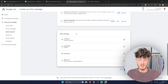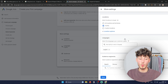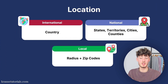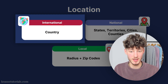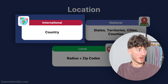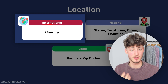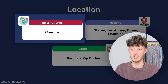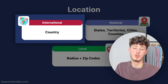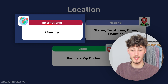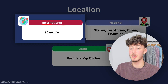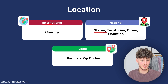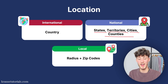In more settings you can set up your location targeting. There are three different location settings. The first is international — if you have an e-commerce business or one that serves worldwide, create one ad group per country. The second is national, which includes states, territories, cities, and counties. The third is local, which is more advanced and requires pairing radius and zip codes.